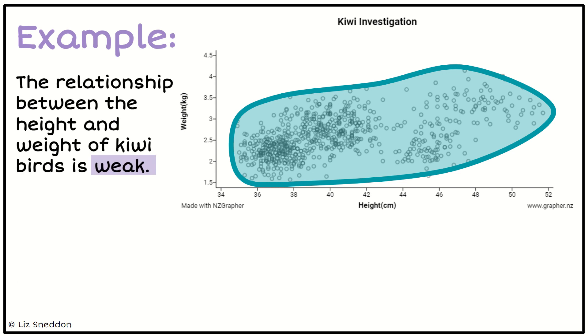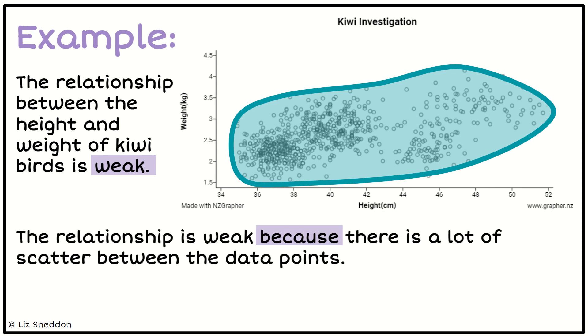So that's what I want to identify in a sentence. So I've got my variables, the height and weight of kiwi birds, and I've said that the relationship is weak. Now I need to justify that it's weak because, and what I want to talk about is that there is a lot of scatter between those data points, so they're quite spread out.